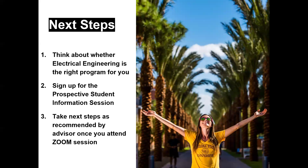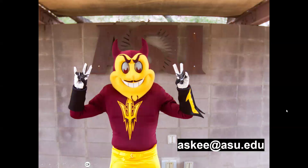Your next steps: think about whether electrical engineering is the right program for you, and sign up for the prospective student information session via Zoom. It's about an hour — sometimes less depending on Q&A — and you will get that student-specific feedback you're looking for. Take the next steps recommended by the advisor once you attend. We do a lot of work on these, so please review your email when you receive it, as it is a detailed and thorough overview of your specific file. You'll also have access to that advisor for future questions. Thank you for your interest in electrical engineering — email our general inbox if you have questions or want to register for the info session.